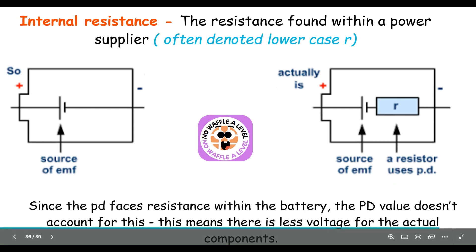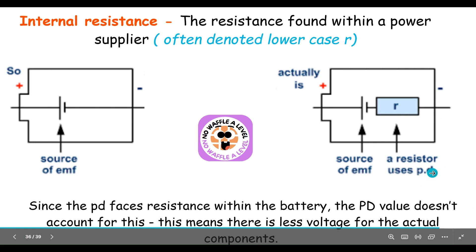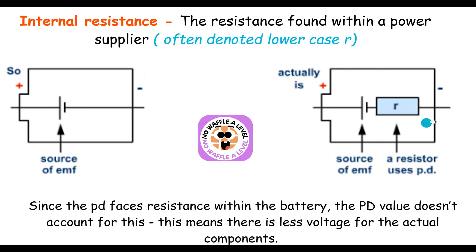Because the potential difference faces resistance within the battery, the PD value doesn't account for this internal resistance — it only covers the external resistance. EMF accounts for the total resistance including internal resistance. So some potential difference is wasted at the internal resistance, which is why EMF and terminal potential difference are not the same: EMF is the energy supplied, while PD is what remains after the internal resistance has consumed some voltage.